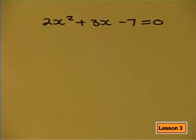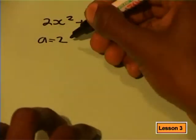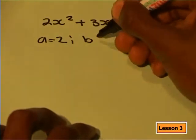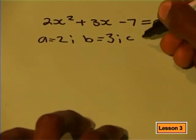The equation is already in simplest standard form which means that a equals 2, b equals 3, and c equals negative 7.